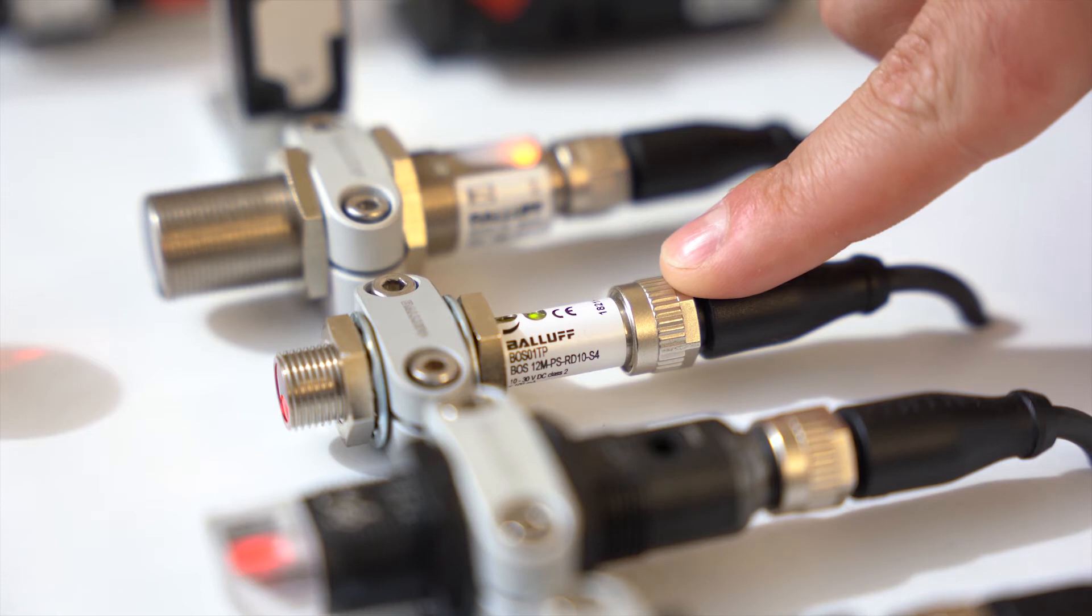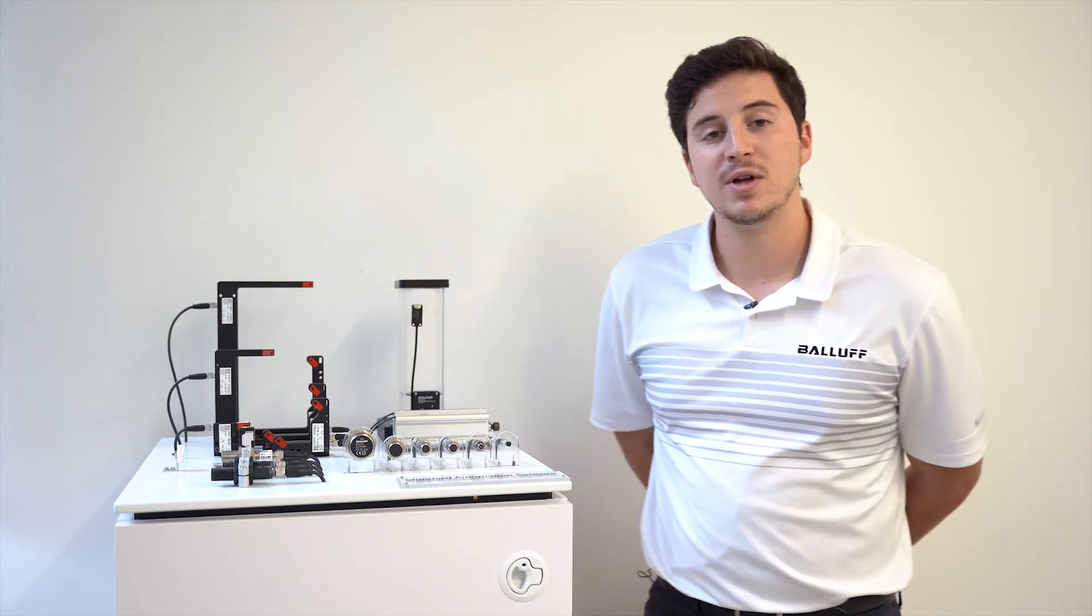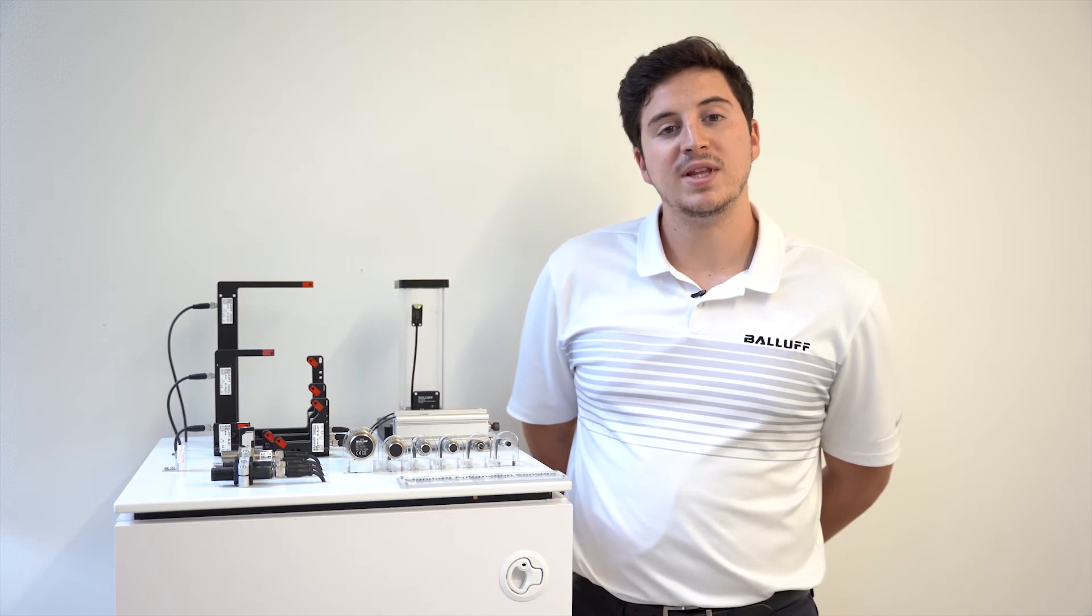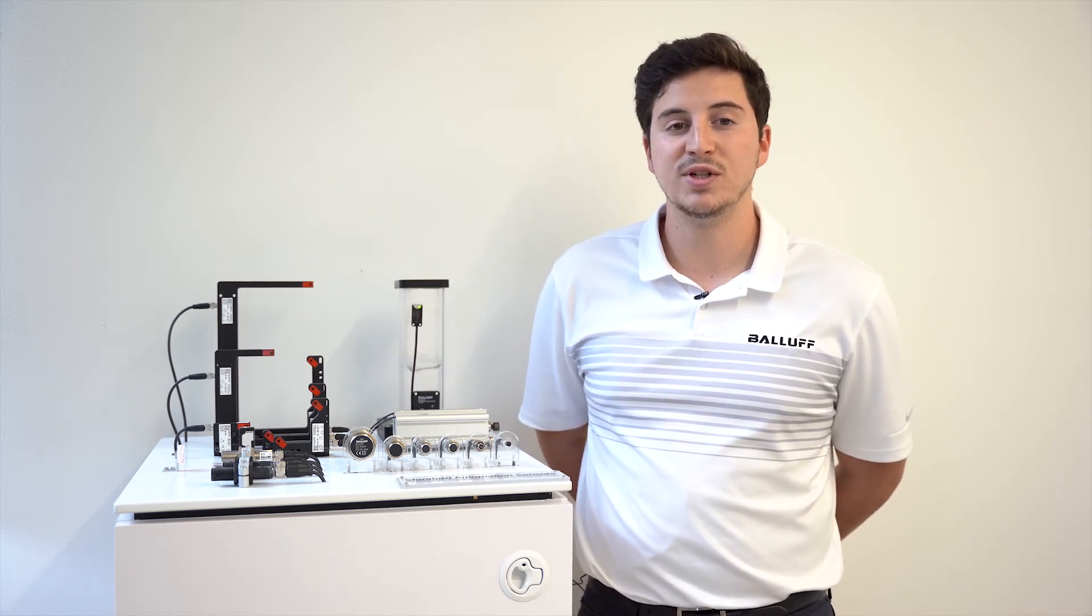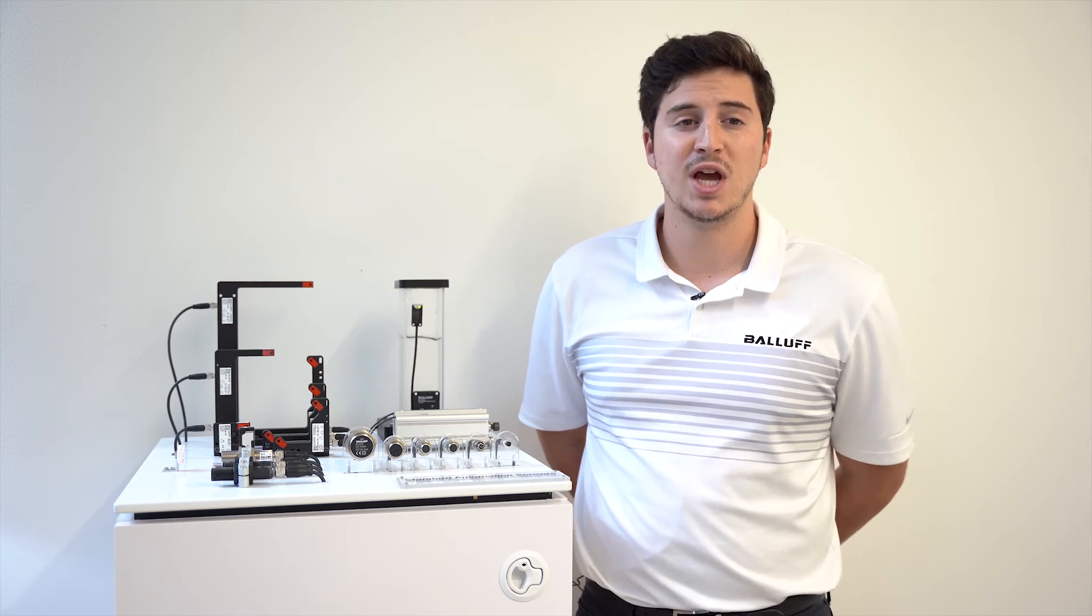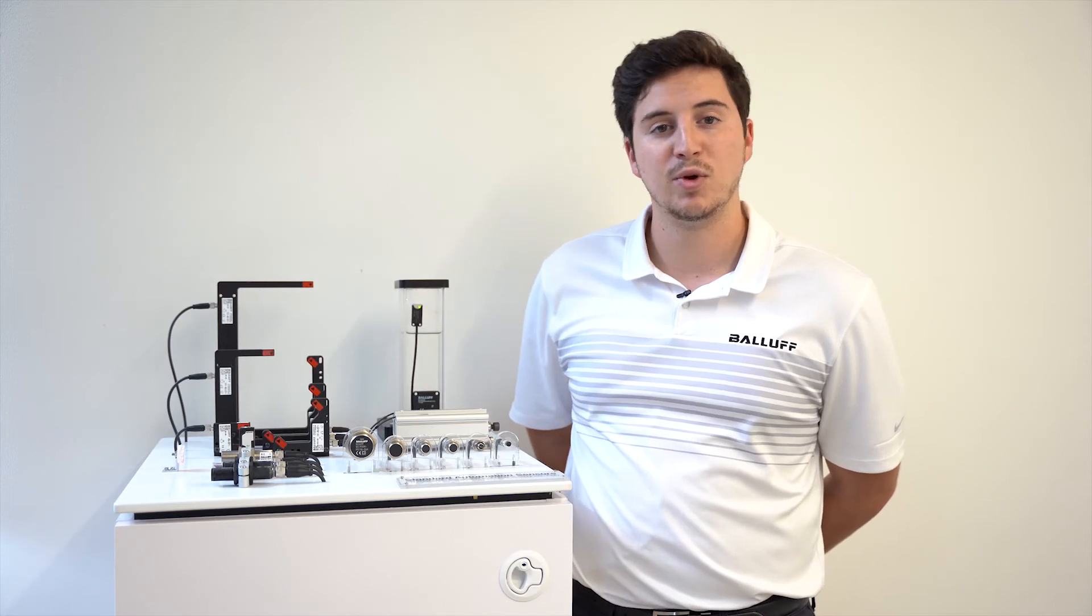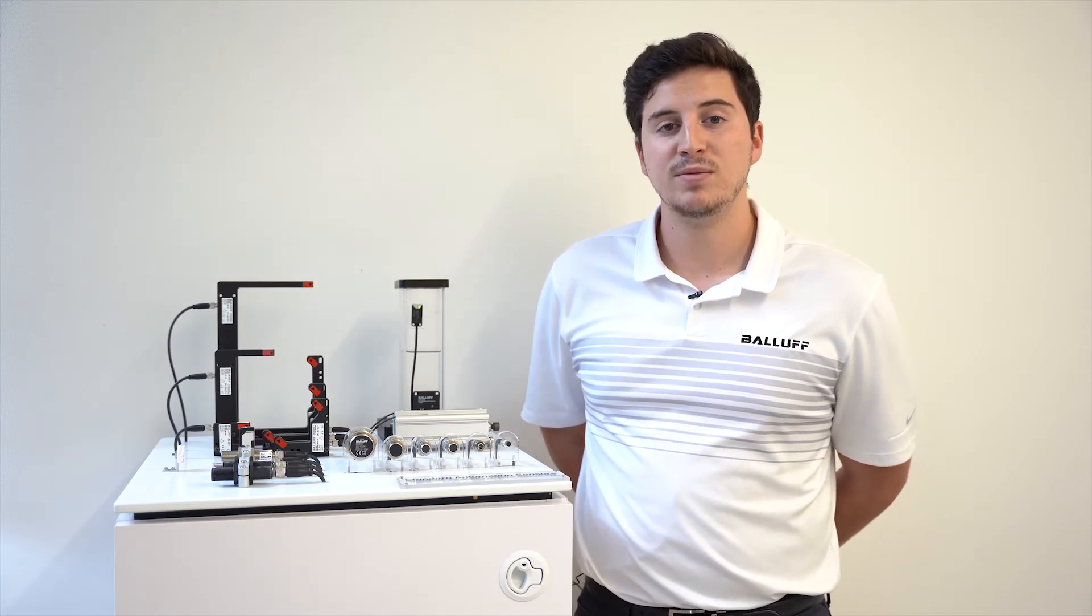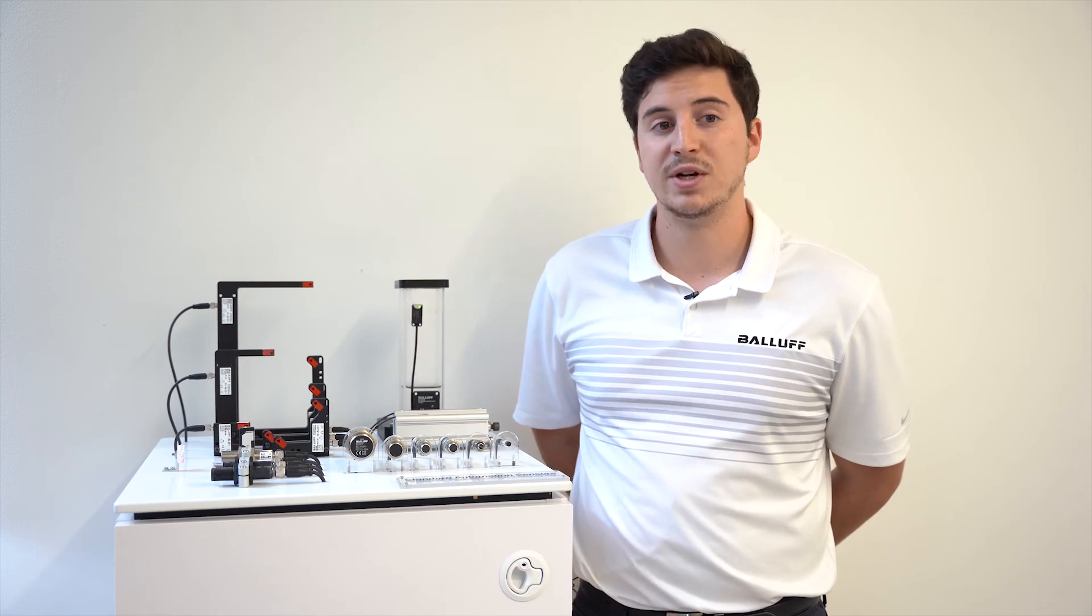The last diffuse photo eye is a diffuse sensor with background suppression. So it works similar to other diffuse sensors, but it can also detect objects with a teachable switching distance using what's called a potentiometer, which is located on top of the housing and is also adjustable. Background suppression provides reliable object detection regardless of surface or material as well.